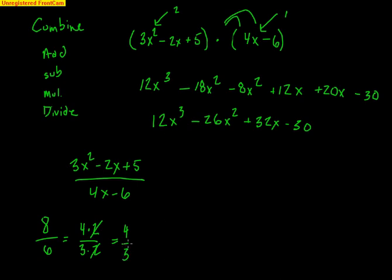Same thing when you're working here — you have to find the factors. Can this top even be factored? I know the bottom could be factored. Notice the bottom: I could take out a 2, there's a 2 that's common. The first thing you should always look to do is take something out, and I get 2(2x minus 3).